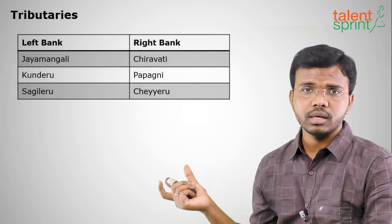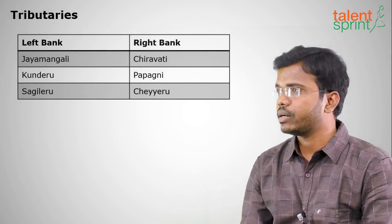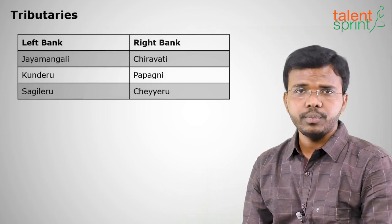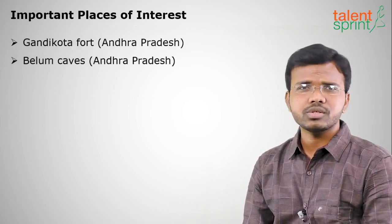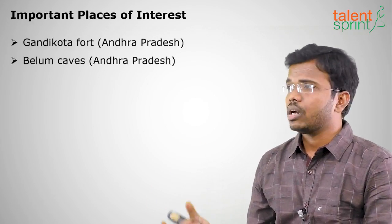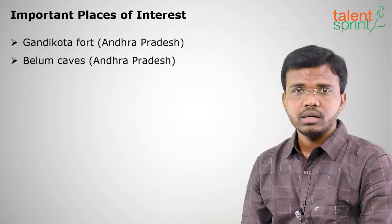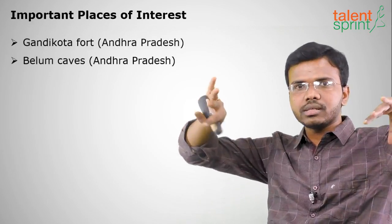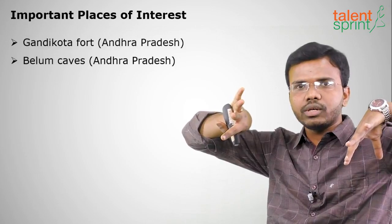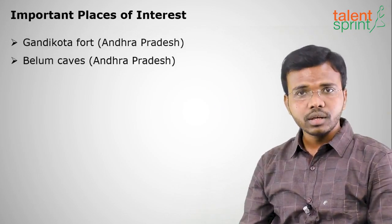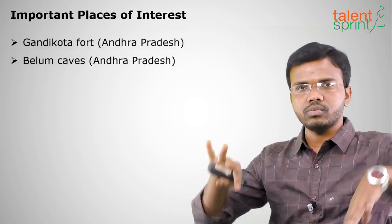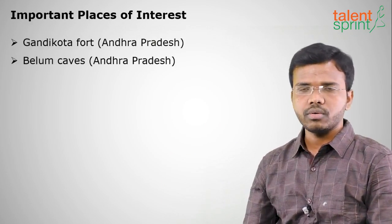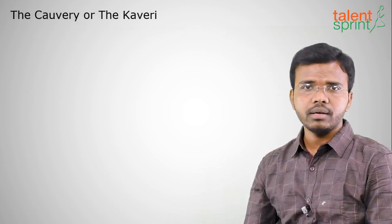Left bank tributaries of the Penna are Jayamangali, Kunderu, and Sagileru. Right bank tributaries are Chitravathi, Papagni, and Cheyeru. Important places of interest are Gandikota Fort in Andhra Pradesh, where the river flows through valleys between two mountains, and Belum Caves in Andhra Pradesh.